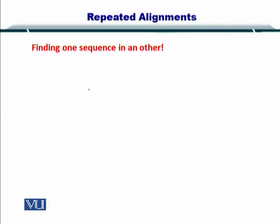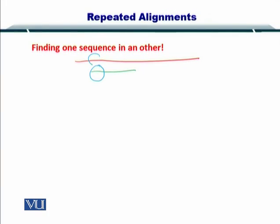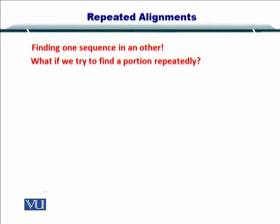So what can be done to modify this algorithm? Our initial problem is finding one sequence in another. If you have one sequence like that and another sequence here, what you're trying to do is essentially finding portions of this sequence within sequence number one. So this is our local alignment problem. How can we modify this to include a portion repeatedly?